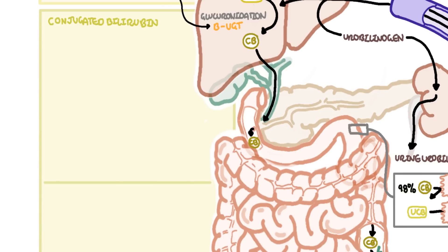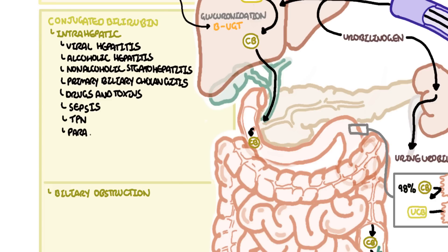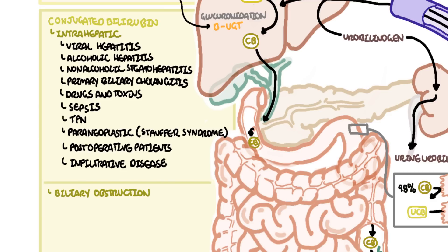The second category of hyperbilirubinemia are disorders associated with conjugated hyperbilirubinemia. This can be further divided into intrahepatic causes or post-hepatic causes, also known as biliary obstruction. Focusing on the intrahepatic causes, these include viral hepatitis, alcoholic hepatitis, non-alcoholic steatohepatitis, primary biliary cholangitis, drugs and toxins such as anabolic steroids, sepsis, paraneoplastic syndromes associated with malignancies such as renal cell carcinoma that can cause Stauffer syndrome, TPN, post-operative patients, and liver infiltrations such as amyloidosis, sarcoidosis, and tuberculosis.